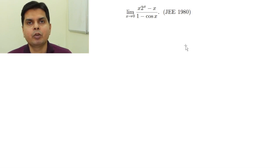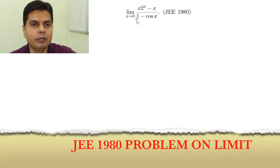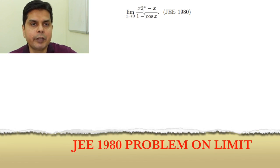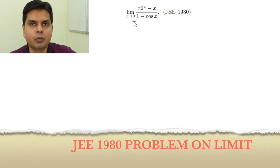Today we are going to solve a problem of differential calculus. This is a problem of finding the limit of this expression: x times (2 to the power x minus x) divided by (1 minus cos x), as x tends to 0.